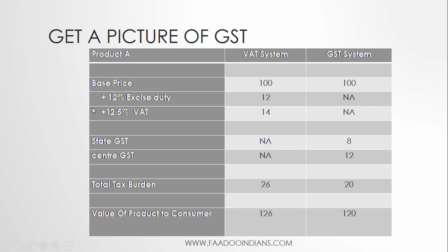Under the GST system, these cascading taxes are eliminated. The state levies 8 percent GST and the center levies 12 percent GST. The total burden comes out to 20 percent, giving a net saving of 6 rupees compared to the old system.